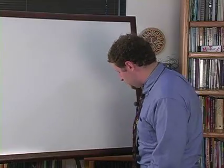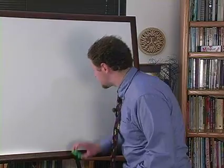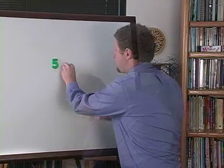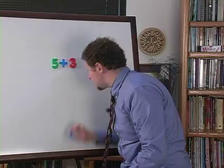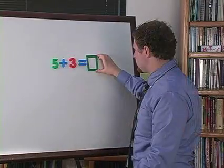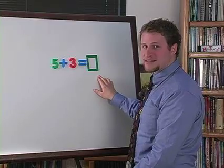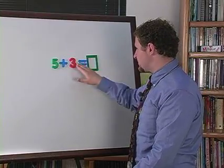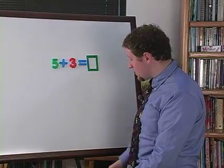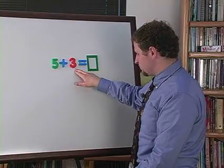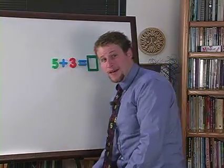Most of the problems that you have probably seen look like this: 5 plus 3 is equal to what? All you have to do is find out what goes inside of the box. Well since you know that both sides of the equal sign are the same, you know that 5 plus 3 is equal to 8.